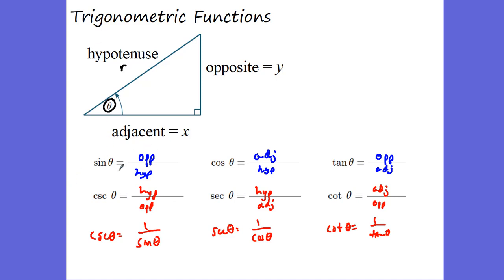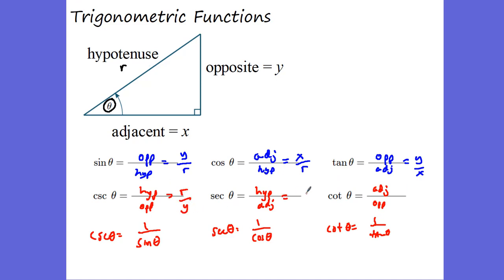I also express these using x, y, and r. The sine of theta equals y over r — sine deals with the vertical, this y value. Cosine deals with the horizontal: x over r. Tangent equals y over x — you can see that's a slope, the change in y over change in x. Cosecant is r over y, secant is r over x, and cotangent is x over y.